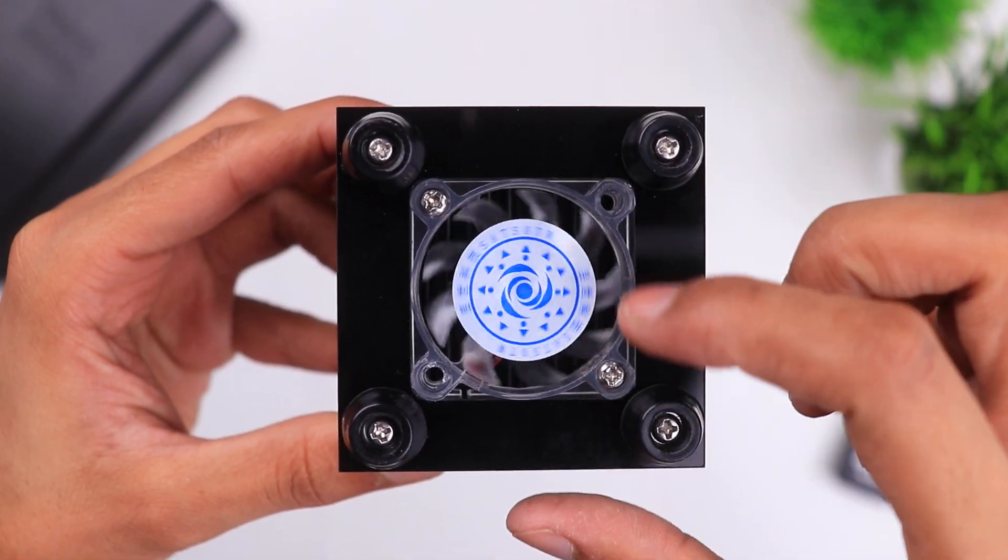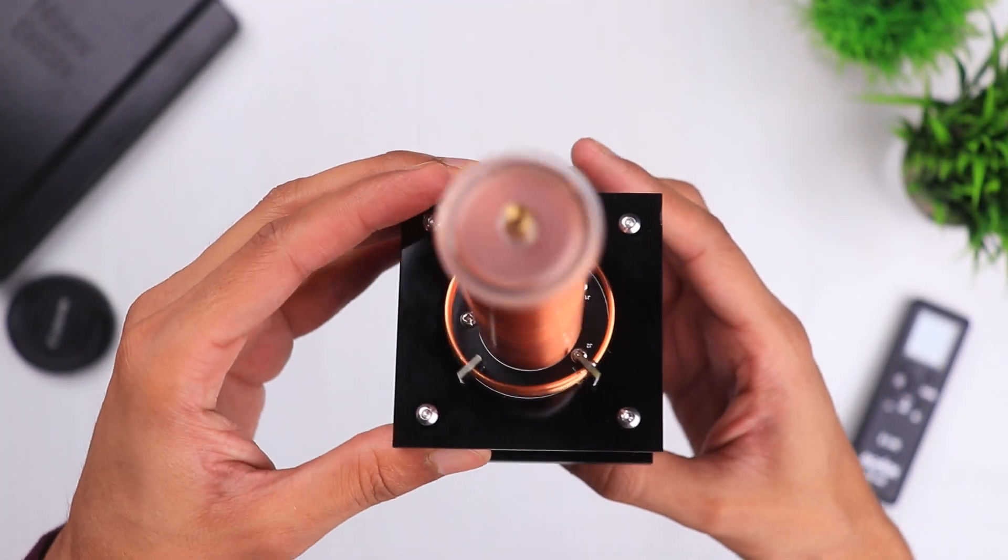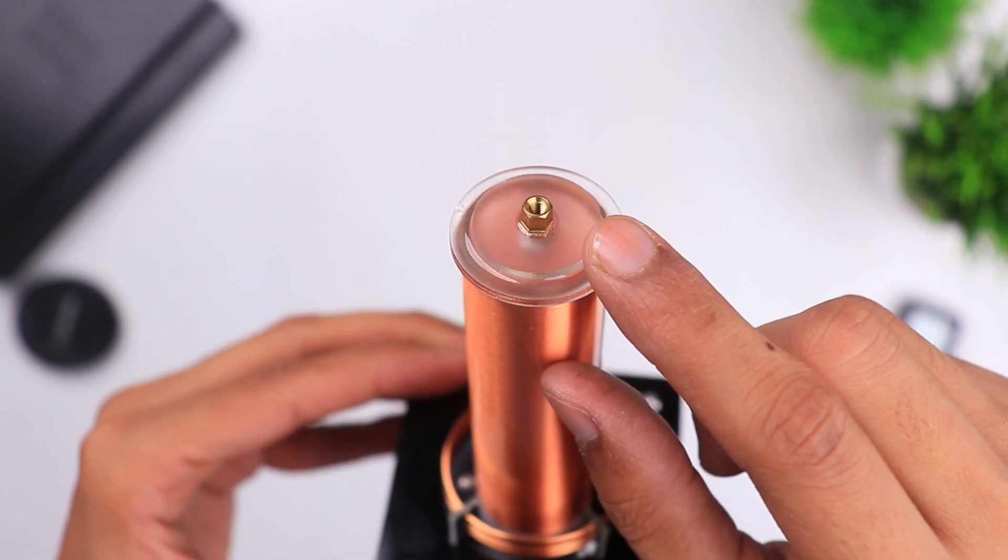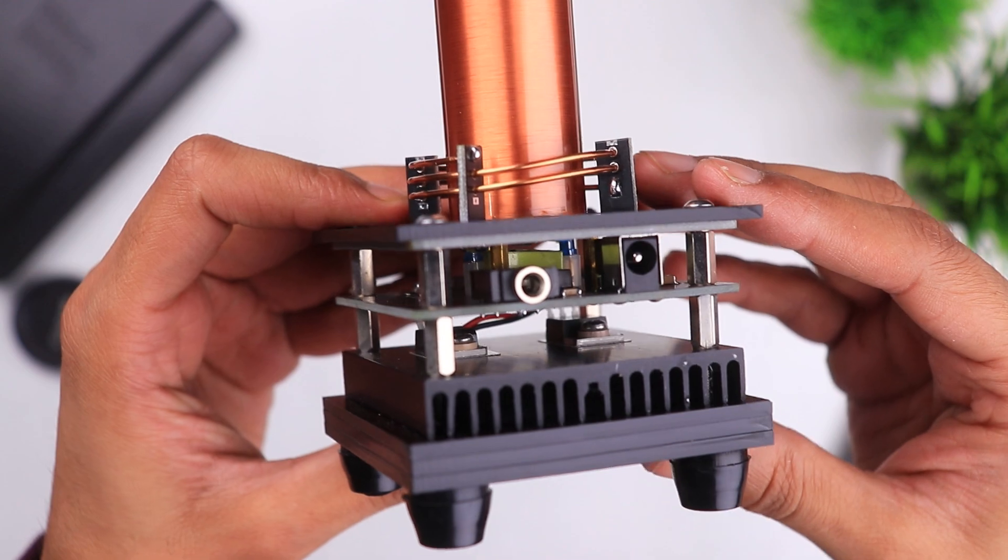At the bottom of the Tesla coil here is a small fan to cool down the radiator. At the top of the Tesla coil there's a small base where you can attach those small accessories like a discharge needle. Overall the build quality is very good.